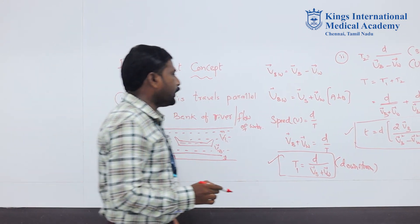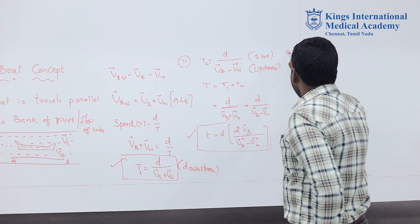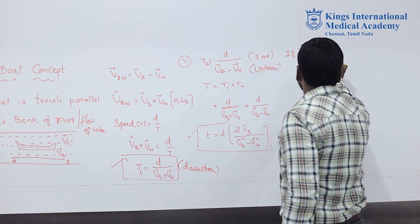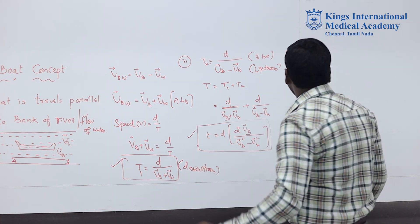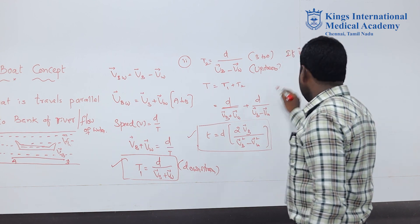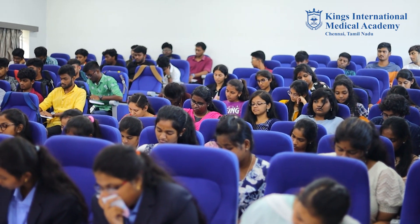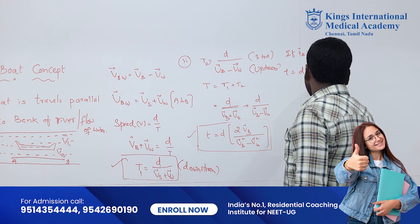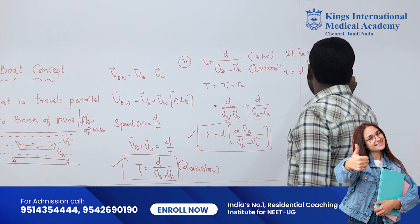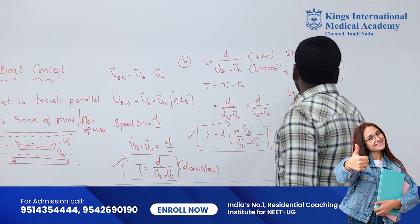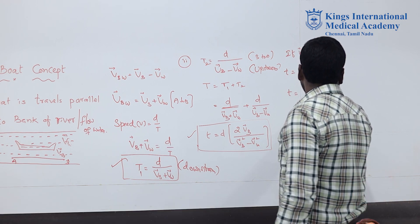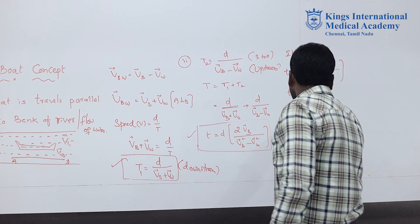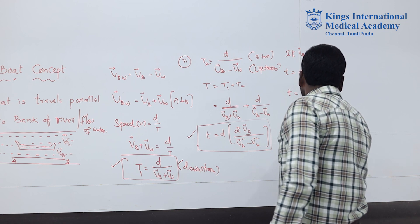If the velocity of the boat is much greater than the velocity of water (VB >> VW), then the velocity of water is negligible. The time period becomes D times 2·VB bar divided by VB bar squared, and since VW squared is approximately zero, we get T equals 2D divided by VB. This is a very important formula when water velocity is much less than boat velocity.